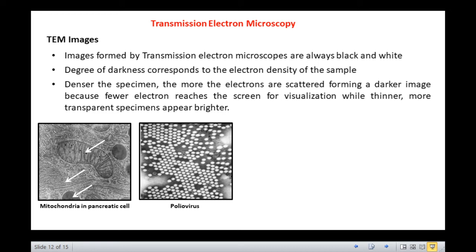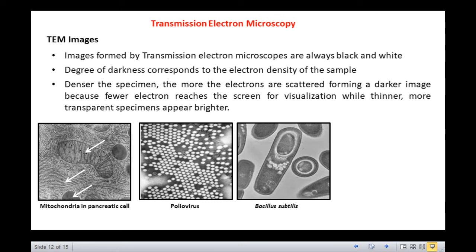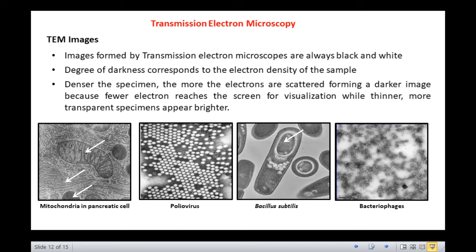Students, this is Bacillus subtilis, the rod-shaped bacteria which we are very familiar with. Just see the endospore inside the bacterial cell. The next picture is that of bacteriophages, viruses which infect bacteria. The darker areas of the image represent those areas of the sample that fewer electrons were transmitted through because they are thicker or denser. The lighter areas of the image represent those areas of the sample that more electrons were transmitted through because they are thinner or less dense.